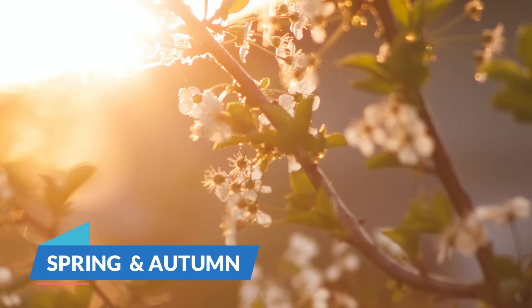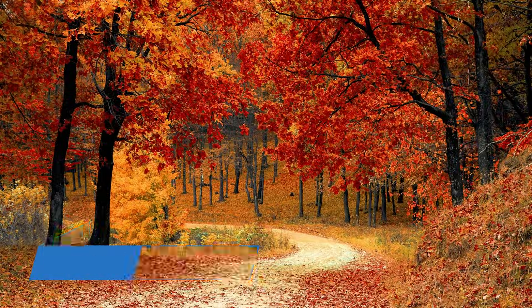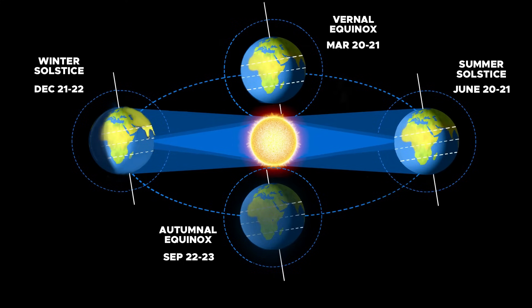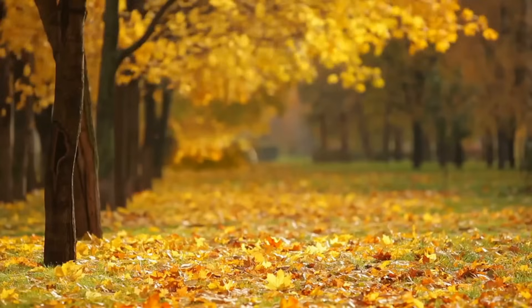So what about the other two seasons — spring and autumn? During September, the sun rises directly above the equator, and from September to November it's autumn in the north and spring in the south. During March, again the sun rises directly above the equator, and the months of March to May are spring season in the north and autumn season in the south.